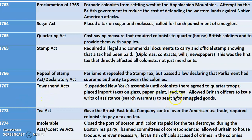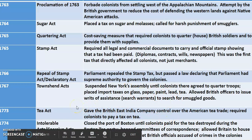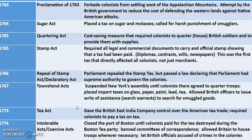The Townshend Acts were very unpopular — they suspended New York's assembly, essentially canceling the state Congress until colonists agreed to have troops quartered in their homes, and also placed new taxes on them. The Tea Act put a tax on tea coming into America — you had to buy it from the British East India Company. Many American colonists protested by buying coffee instead, which is why most Americans drink coffee today while British people still drink tea.